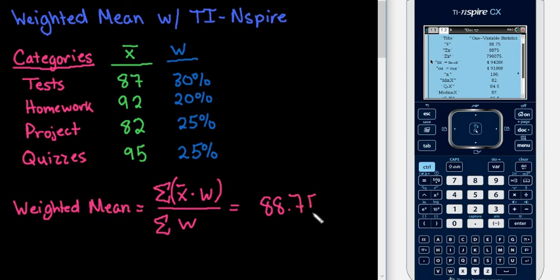All of the other information I will explain in other videos, but the only one that you want to look at is the X-bar, the 88.75%. So our weighted mean for this setup would be 88.75%. As always, thanks for watching.